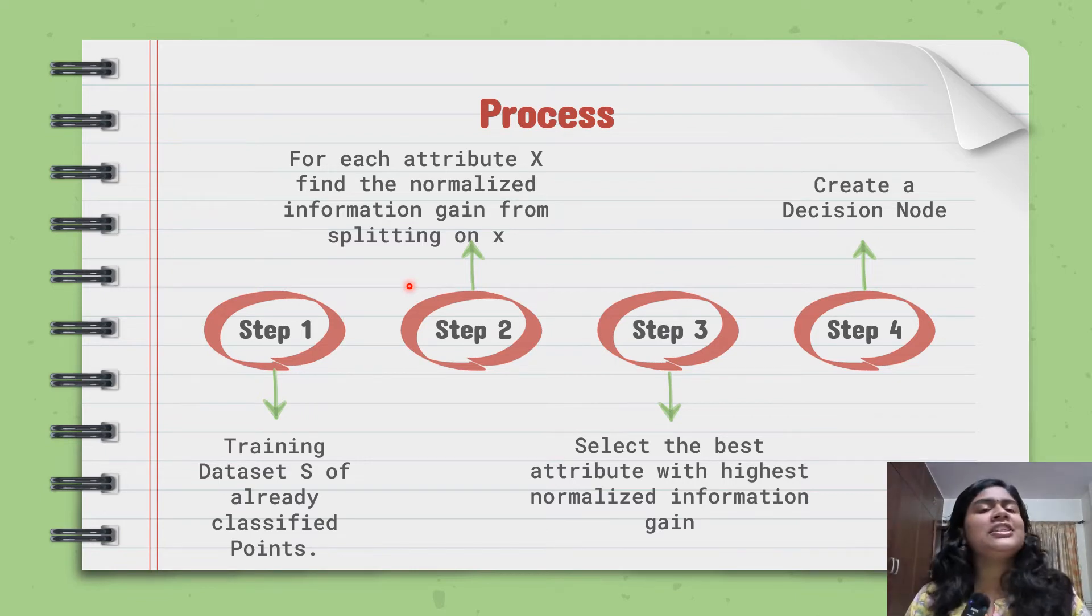Now the third step is similar to the ID3. You will select the best attribute with highest normalized information gain. So basically, in ID3, you used to select one which has the highest information gain. Here we are going to select one which has highest normalized information gain. And at last, we will create a decision node.